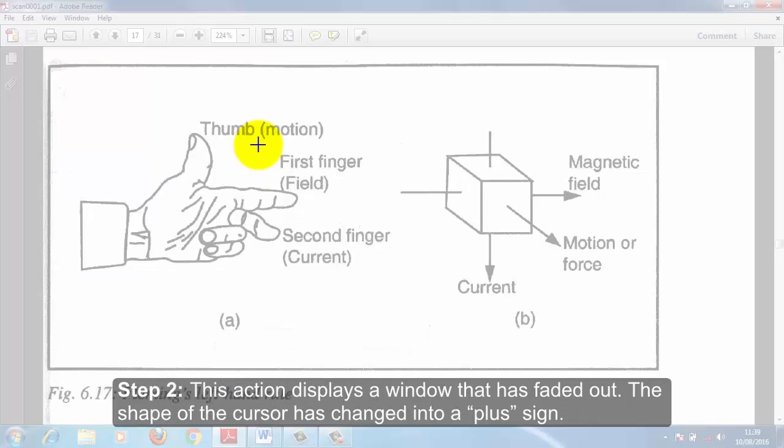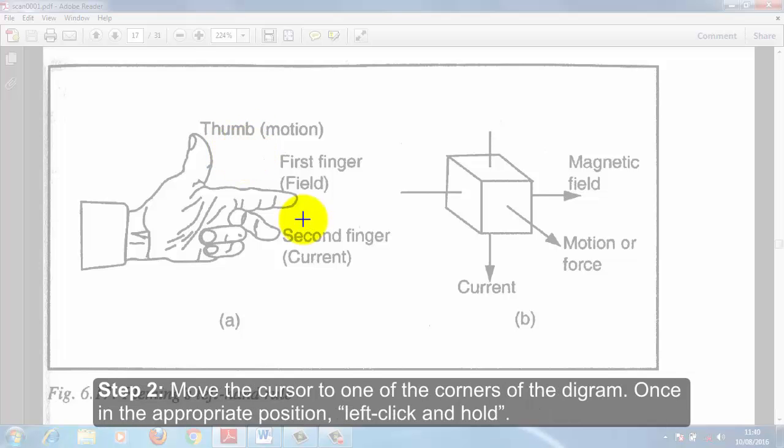This action displays a window that has faded out. The shape of the cursor has changed into a plus sign. Move the cursor to one of the corners of the diagram. Let's say somewhere here.